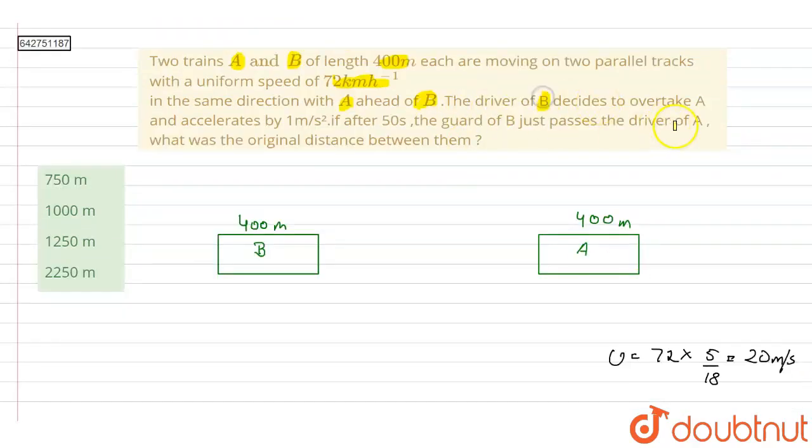Now further, we have the driver of B decides to overtake A and accelerates by 1 meter per second squared. If after 50 seconds the guard of B...